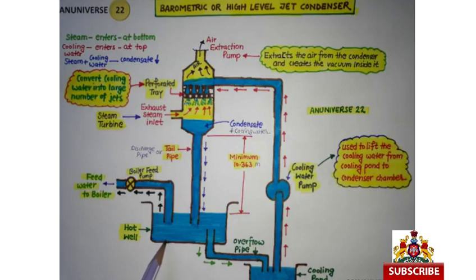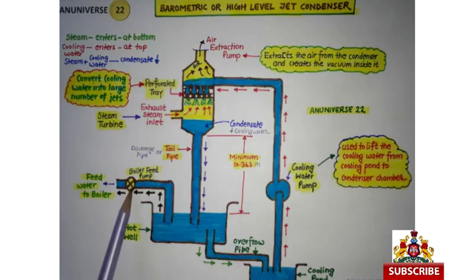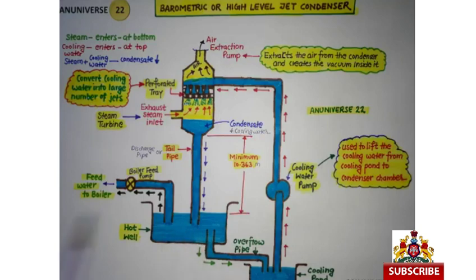Hot Well से Feed Water को Boiler Feed Pump की मदद से Boiler के Water Space में भेजा जाता है। उसके बाद बाकी बचा हुआ पानी Gravitational Force की वजह से Overflow Pipe से होता हुआ Cooling Pond में चला जाता है।